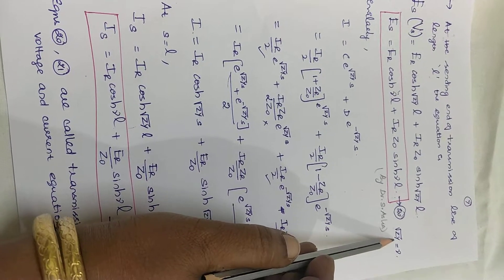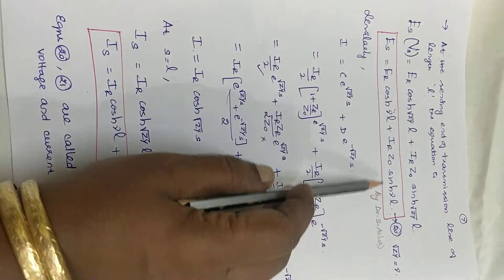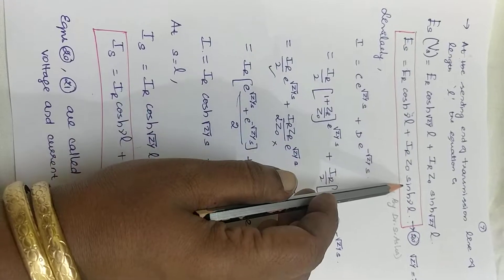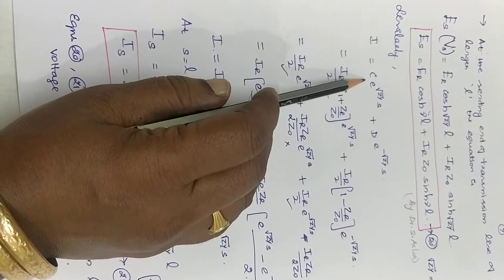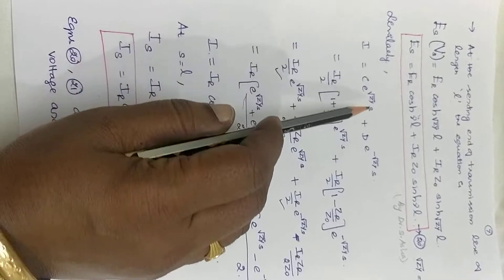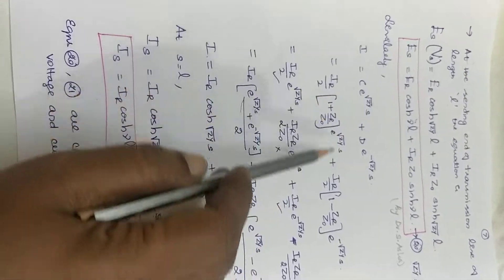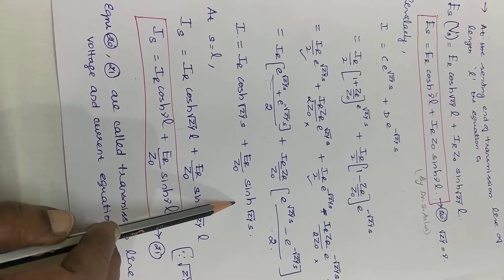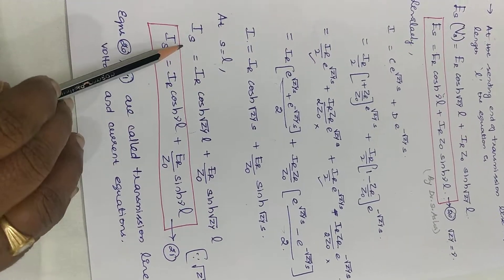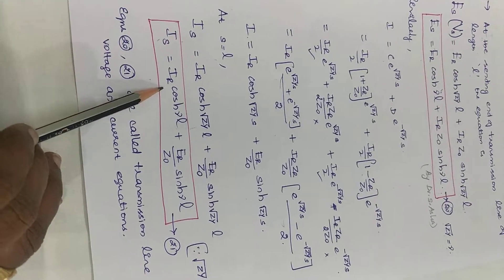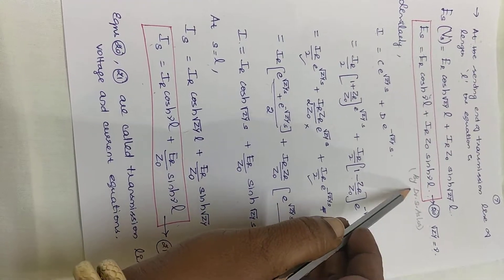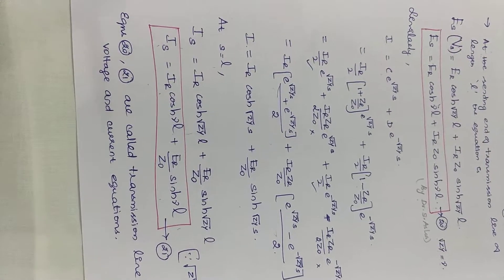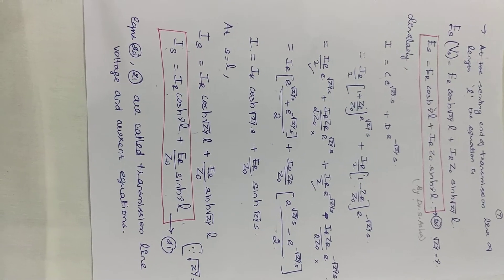Since √ZY is the propagation constant gamma, the final equation takes the form ES equals ER·cosh(γL) plus IR·Z0·sinh(γL). Similarly, substituting the values of C and D and rearranging in terms of cosh and sinh at S equal to L gives the sending-end current equation. These two equations, numbered 20 and 21, are called the transmission line voltage and current equations. We will continue in the next video.